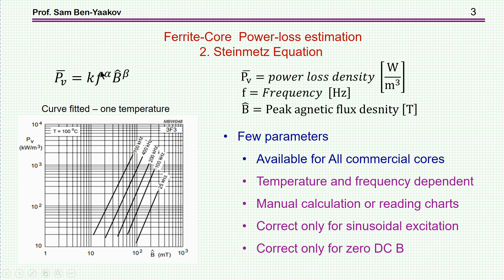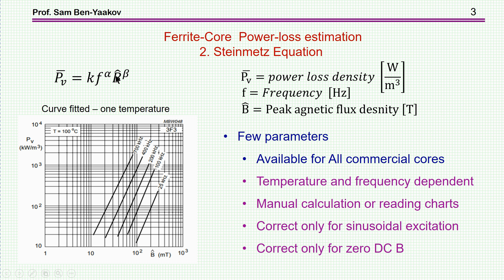The advantage of the Steinmetz equation is that it has rather few parameters and that it is available for commercial cores — all vendors are actually providing this information. Unfortunately, these constants are temperature and frequency dependent, but this information is also provided by most manufacturers. The downside of this approach is that you have to do manual calculation: you take the equation, look for the constants, do the calculation, look up charts, or go to calculators that vendors offer online. So you cannot use it within a SPICE simulation environment.